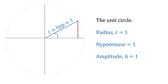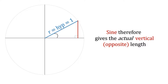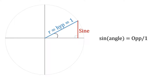The unit circle is a circle with a radius of one unit. The radius is equal in length to the hypotenuse, and this also represents the amplitude. The sine is the opposite over the hypotenuse.